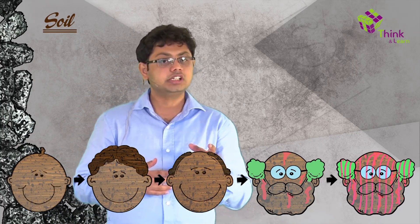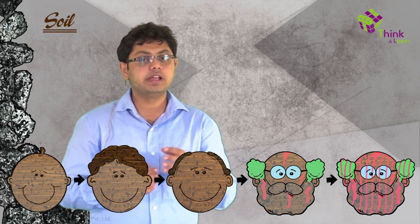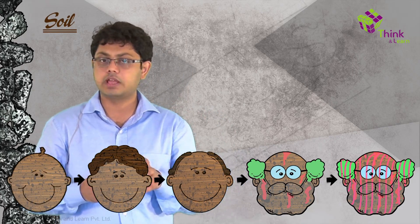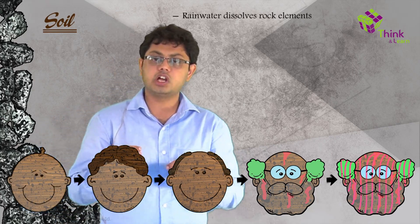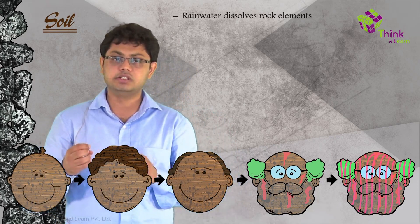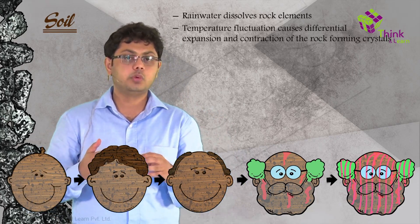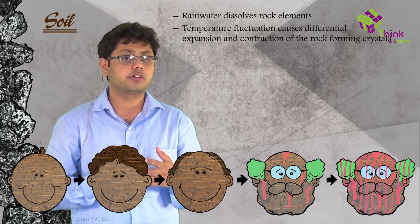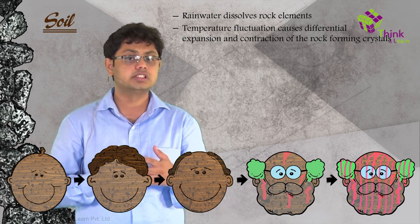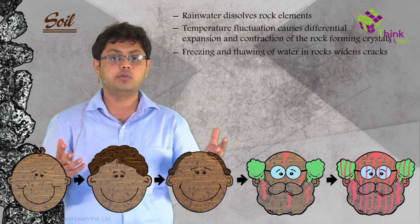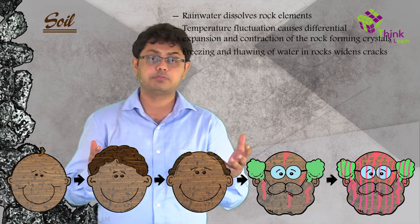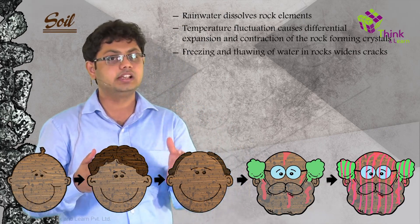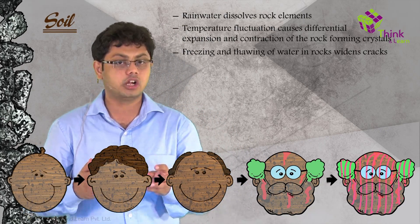Soil formation starts by disintegrating rocks under the influence of climate. Rainwater will dissolve rock elements. Temperature fluctuation will cause differential expansion and contraction of the rock-forming crystals. And the freezing and thawing of water captured inside the rocks will widen existing gaps or cracks inside the rock.